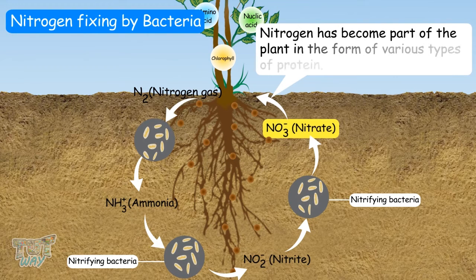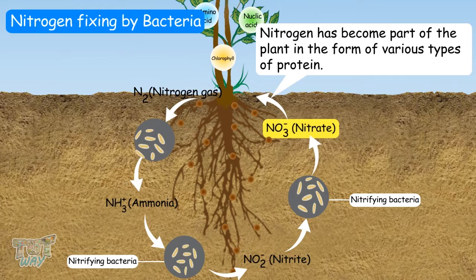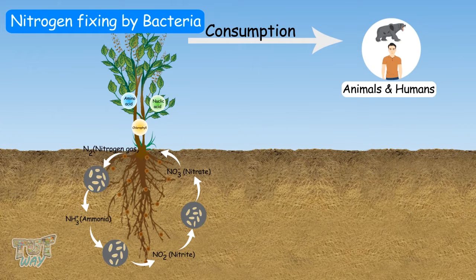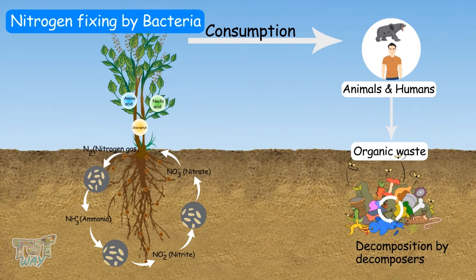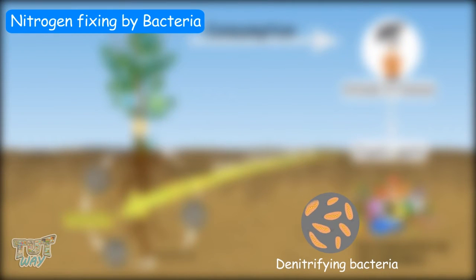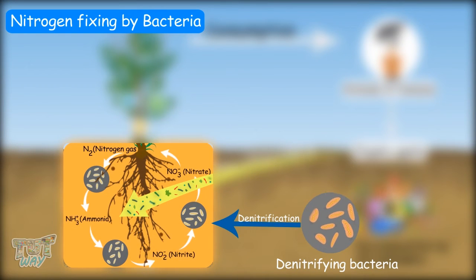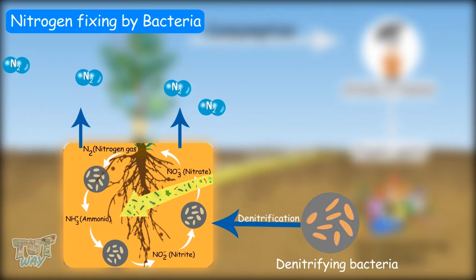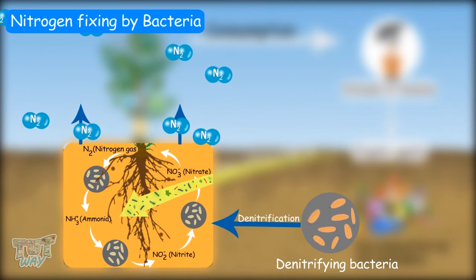So now, nitrogen has become a part of the plant in the form of various types of proteins. We know all types of animals, including humans, take in various plants and plant products as food, directly or indirectly. Thus, nitrogen becomes a part of all plants and animals. The organic waste from plants and animals is then decomposed by various decomposers, and the nitrogen in that organic waste is again converted into ammonia. Certain denitrifying bacteria in the soil also directly convert nitrogen compounds into nitrogen gas, which returns to the atmosphere. This process is called denitrification — where extra nitrogen in the soil is released back into the air.